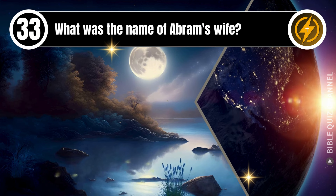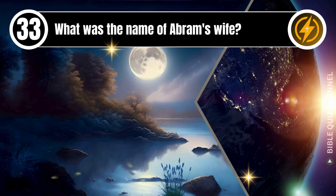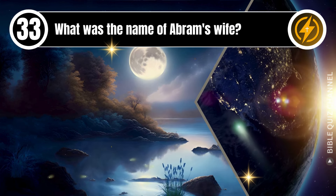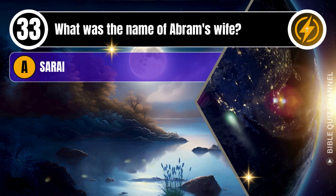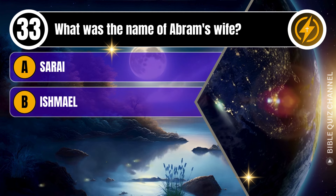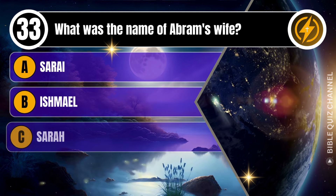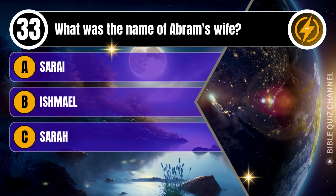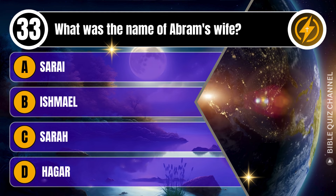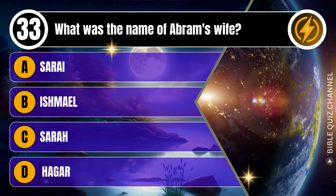Question 33. What was the name of Abram's wife? A. Sarai. B. Ishmael. C. Sarah. D. Hagar. You get 10 seconds.